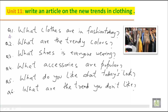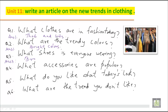Now we will try to answer them. What clothes are in fashion today? You can say tops and suits. For trendy colors, you can say bright colors are in fashion these days. If you want to specify, you can say yellow, magenta, or whatever. For question three — what shoes is everyone wearing — you can say branded shoes like Red Tape.